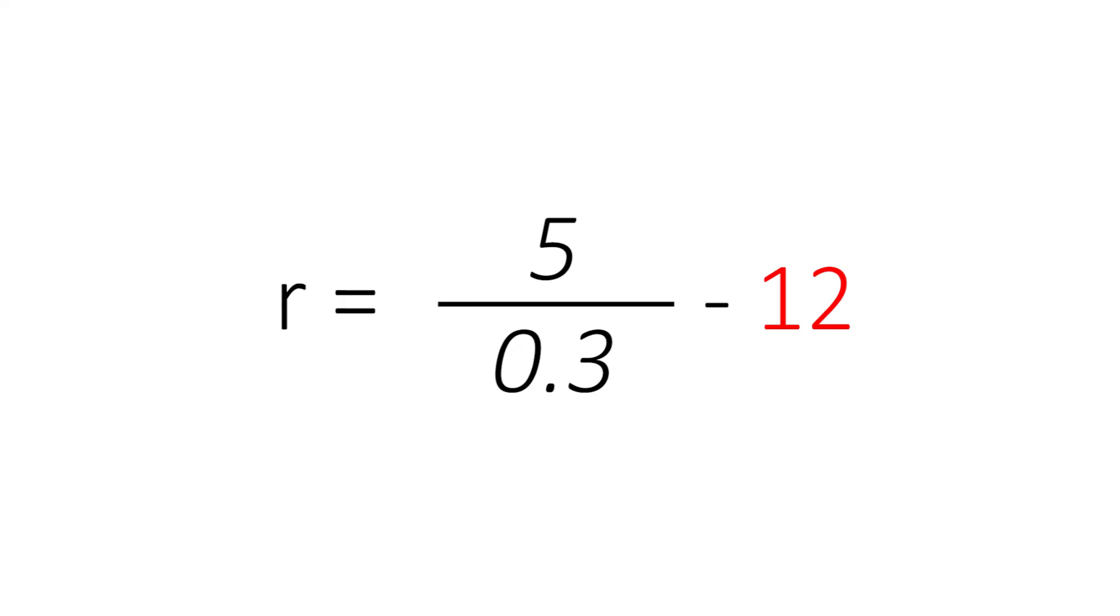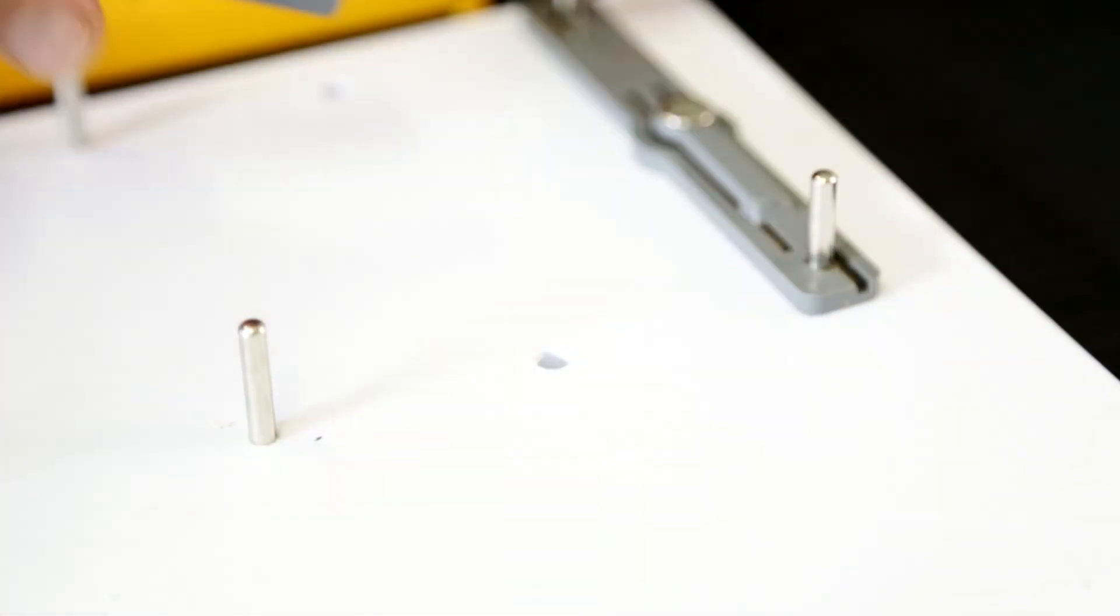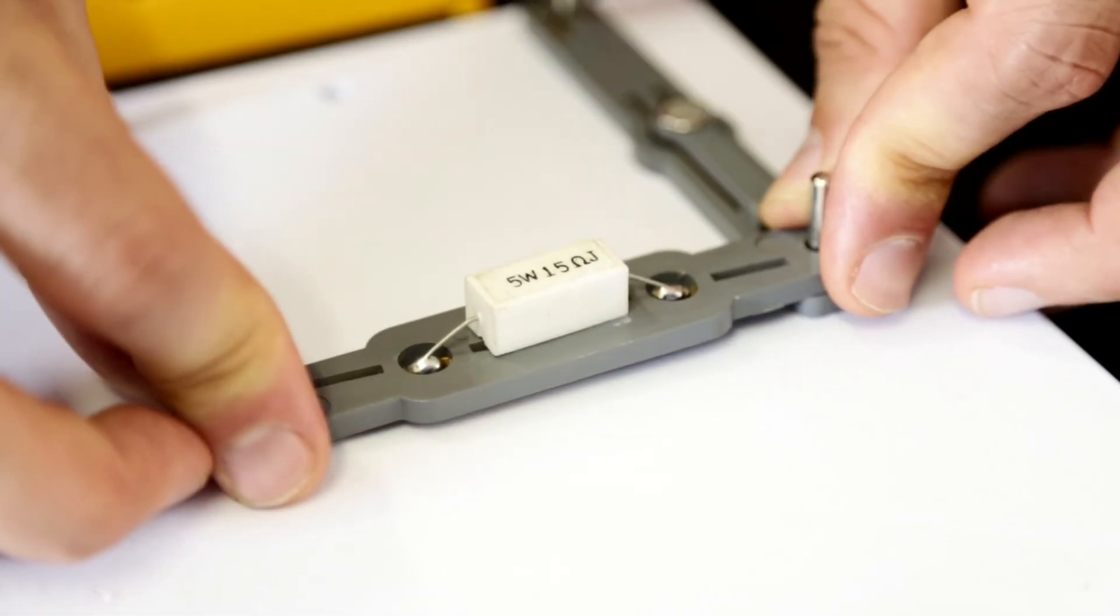This gives us an internal resistance value that you've just calculated. We can repeat the procedure using a different external resistor. This should still give you the same internal resistance value.